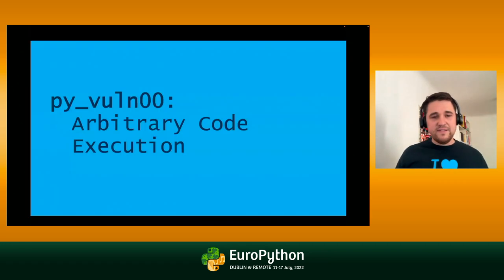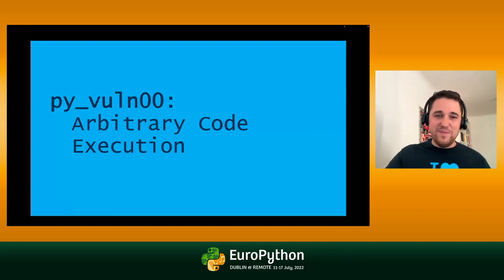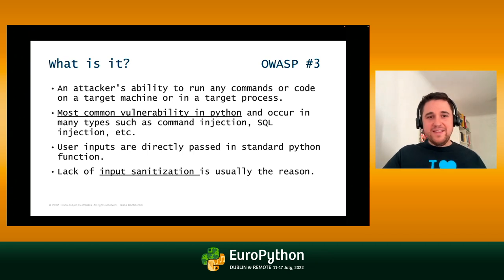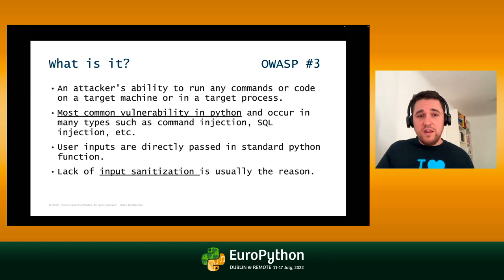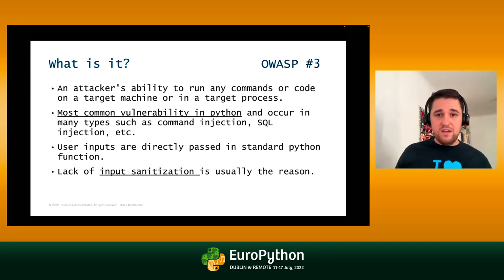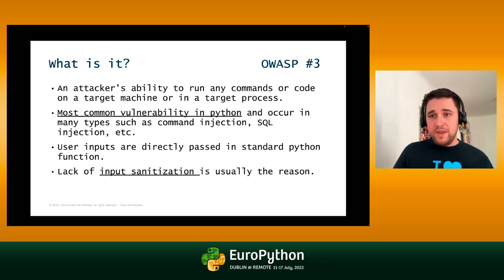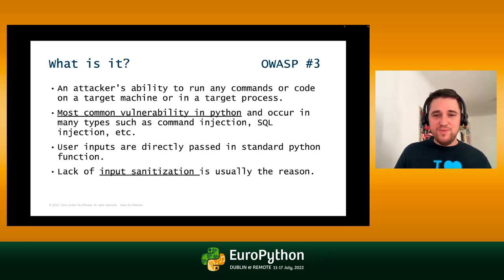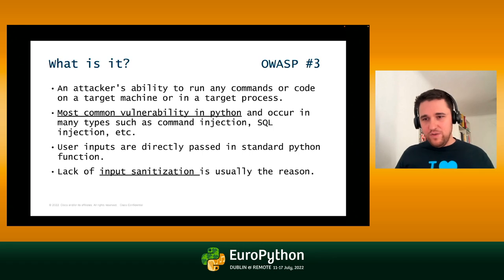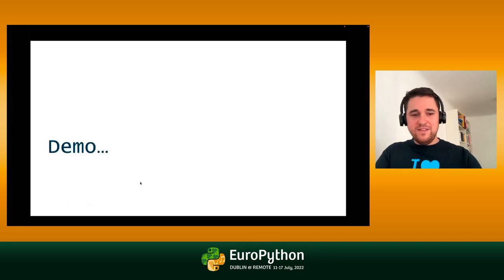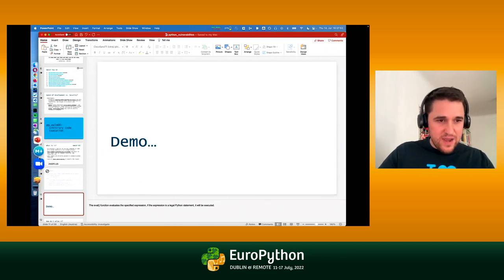Let's start with the first vulnerability: arbitrary code execution. This is an attacker's ability to run commands or code on a target machine or process. It's a classic and common vulnerability in Python — it occurs when user input is passed directly into system commands, such as in SQL queries or other input fields, usually due to a lack of input sanitization. Let's look at the demo in Visual Studio Code.